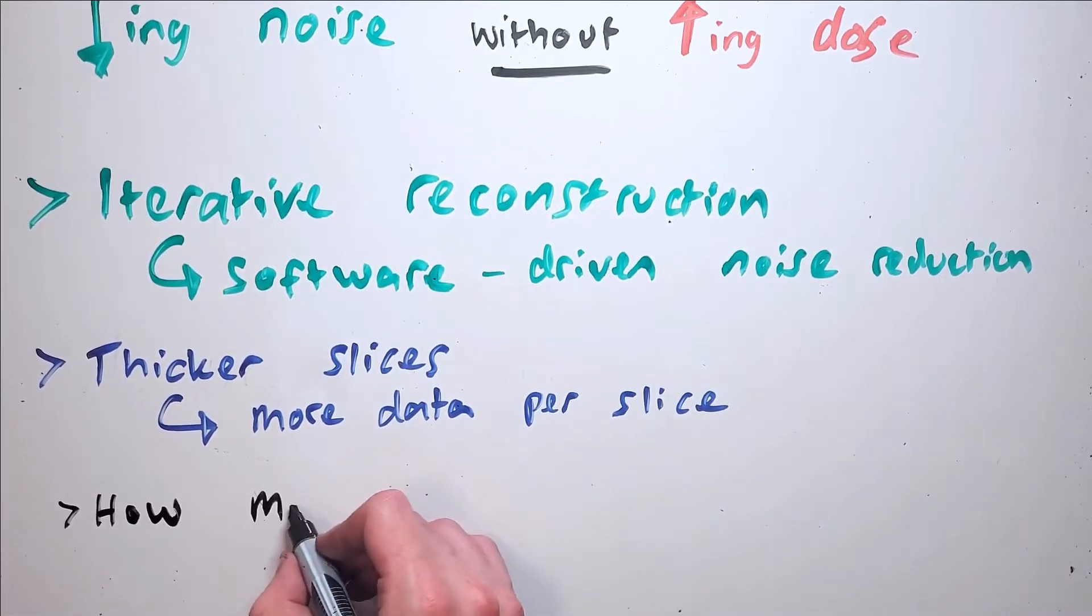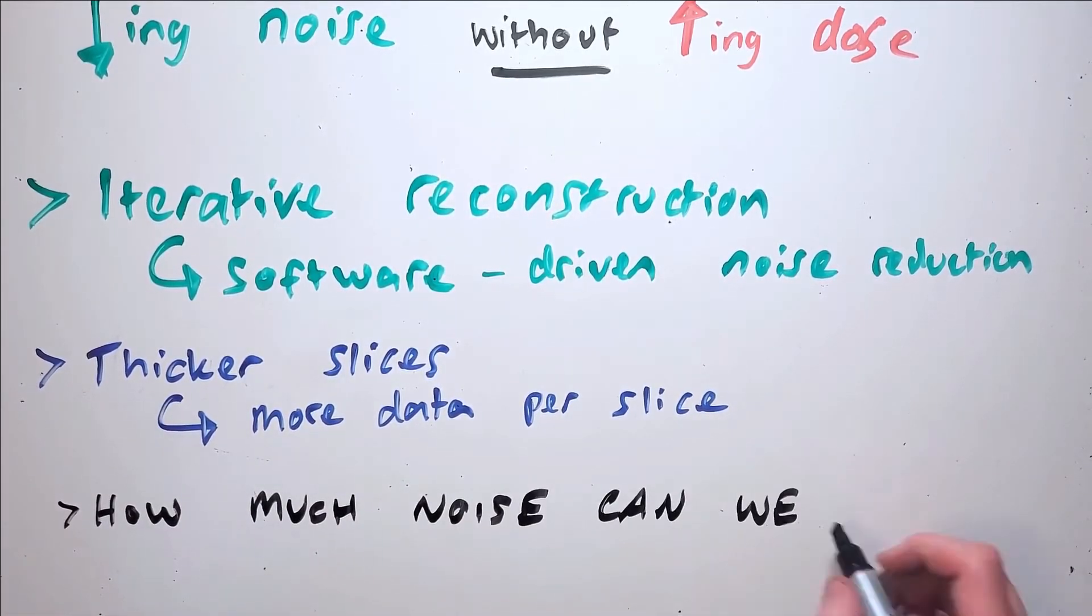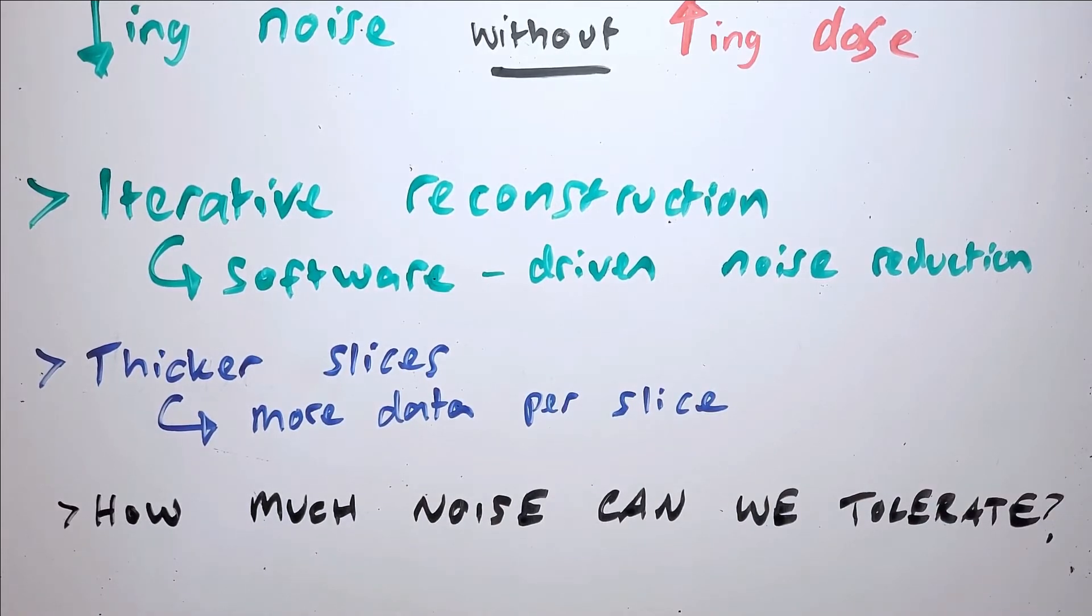The radiation dose should be tailored to produce an acceptably low amount of noise in whichever slice thickness the images will be viewed in. We did speak about this in more depth on the video on image quality.